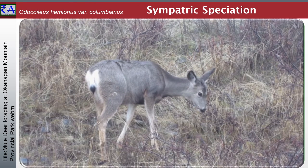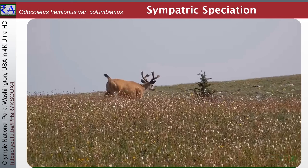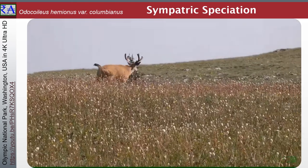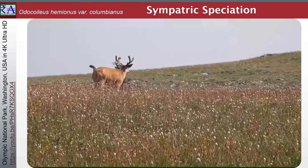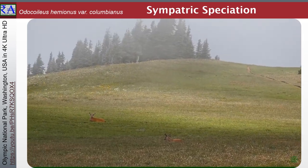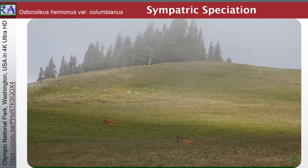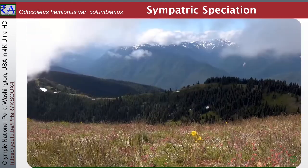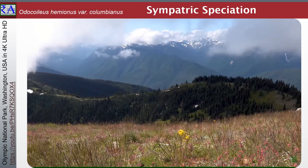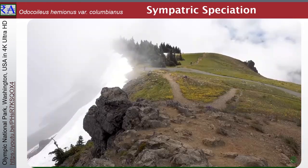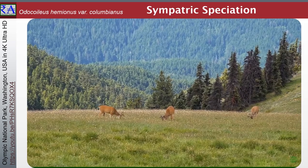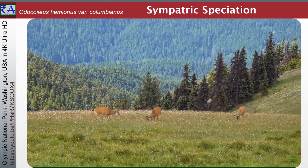We saw in discussions about elk, the Cervus canadensis nelsoni variety example, that elk were considered on the basis of a subspecies. In this topic of white-tailed deer, Odocoileus virginianus, and mule deer, Odocoileus hemionus, these species are in the same genus, but not the same species group. Deer of North America are more distantly related than elk. This has come as the description of sympatric speciation, with the full resultant populations being geographically adjacent and sometimes overlapping.